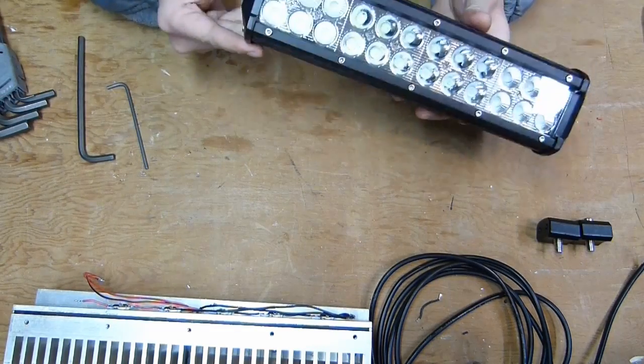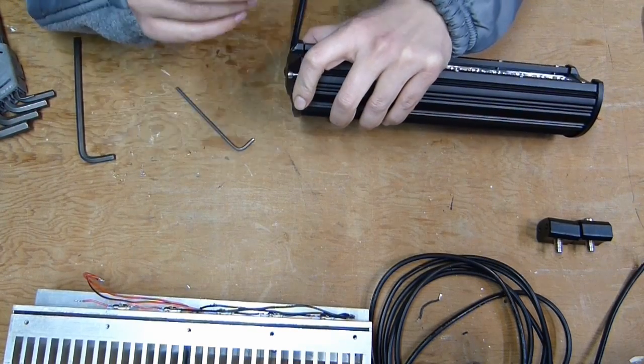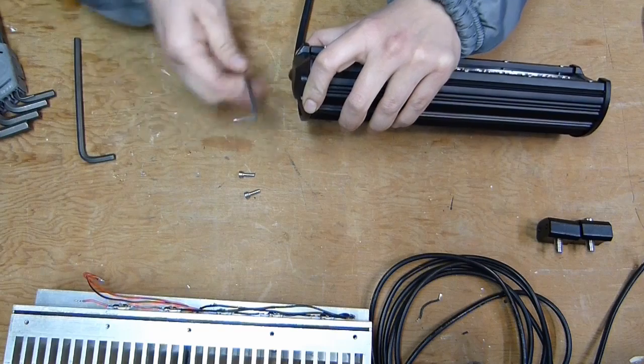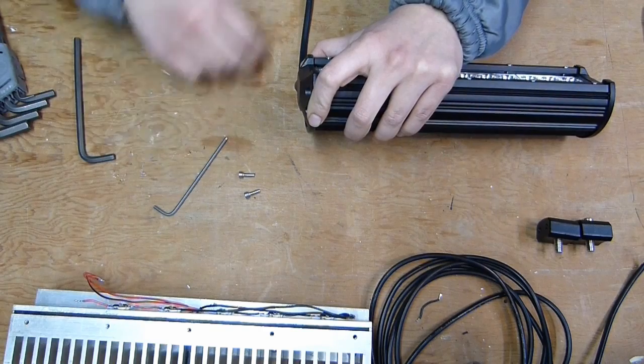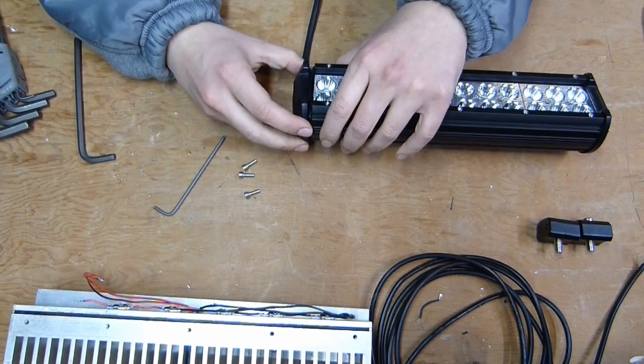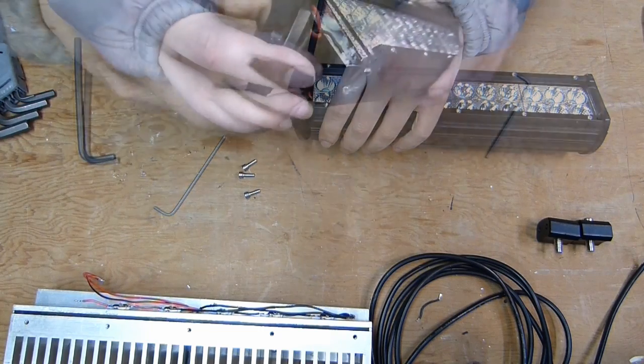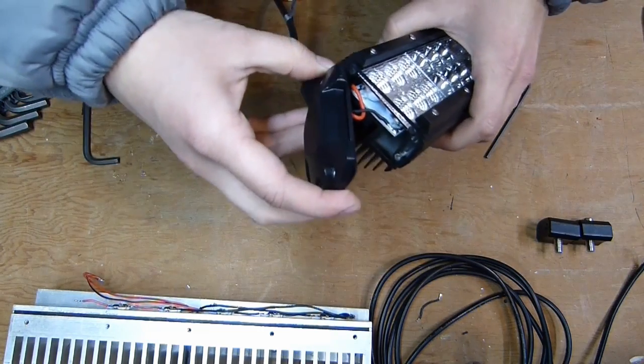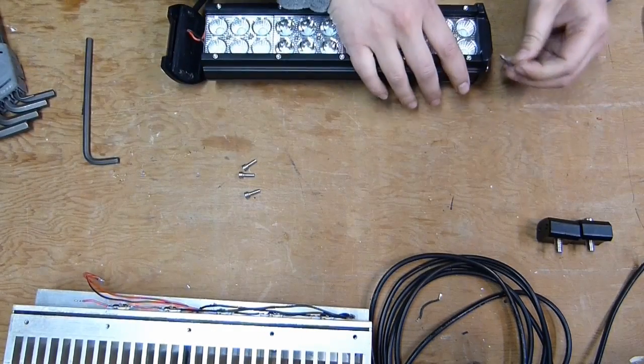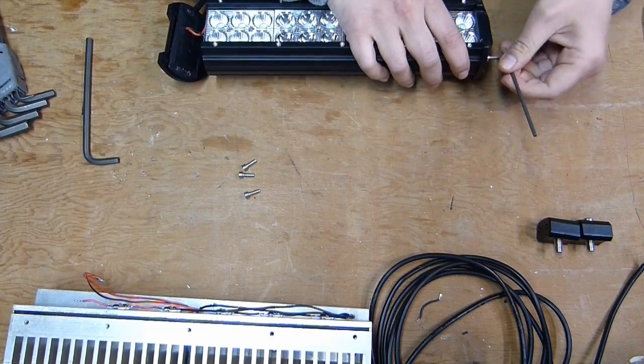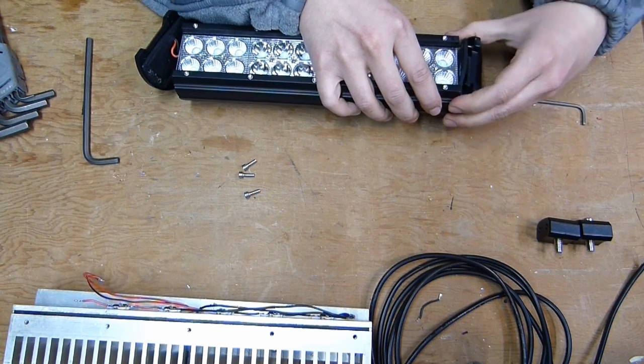So pull those little adjustable mounts off, those two little blocks. And then we'll pull this end cap off. I don't think there's any input protection, transient voltage spike protection or anything like that. So we've got straight input power wires, just soldered right to that board. We'll go ahead and take off the other end cap.